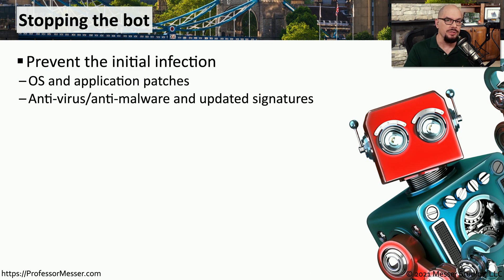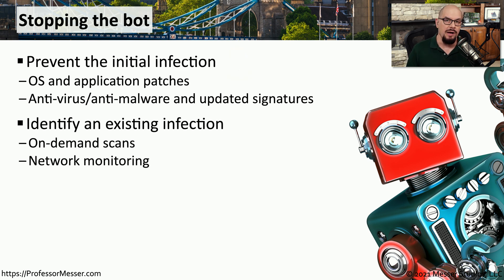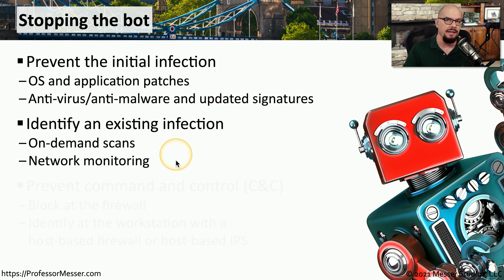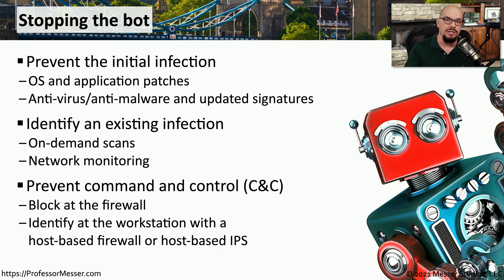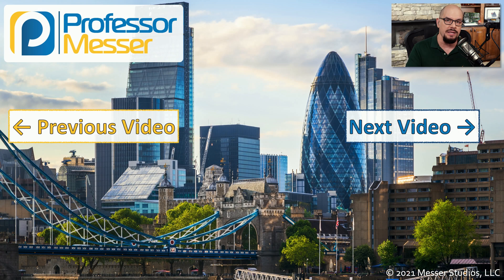There are things that you can do to stop these bots from running on your system. The first thing is to prevent the bots from being installed from the very beginning. You want to make sure that all of your operating systems and applications are patched to the latest version, and make sure that your antivirus or anti-malware software is running the latest signatures. It's still possible for malware to find other ways around your existing security, so you will want to perform on-demand scans and monitor the network for any unusual activity. We know that these botnets communicate back to a central command and control, and if you know what that command and control is, you can block that communication at the firewall or install a host-based intrusion prevention system to constantly monitor for this type of communication.